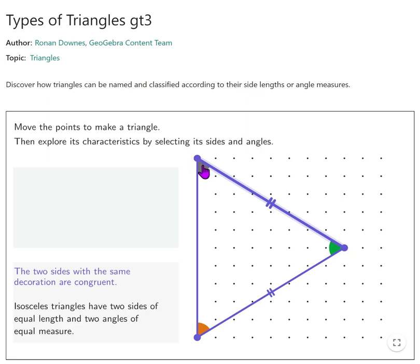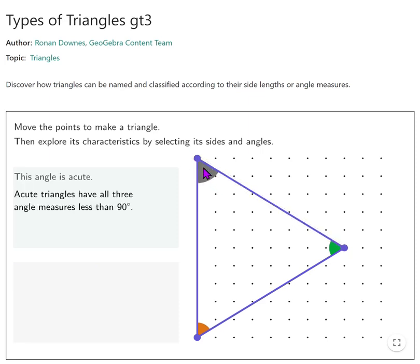Now, let's explore in terms of the angles. Here we've got an acute angle here, here, and here. So this is an acute triangle.